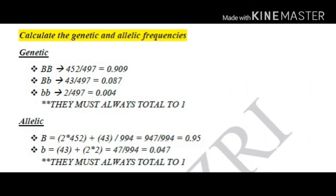Let's continue with the genetic and allelic frequencies. For genotypic frequencies: BB is 452 divided by 497, which is 0.909. B small b is 43 divided by 497, which is 0.087. And small b small b is 2 divided by 497, which is 0.004. They must always total to 1. It's important to remember that when calculating genotypic frequencies, the denominator is the total population, whereas for allelic frequencies, it is the total population times 2.